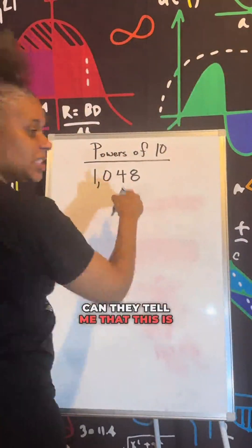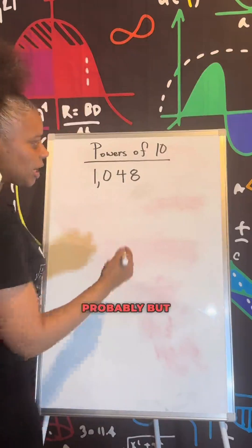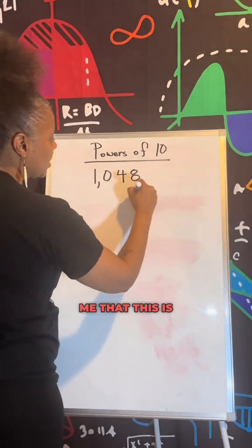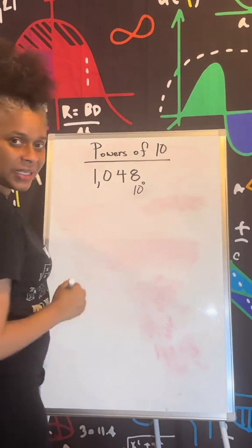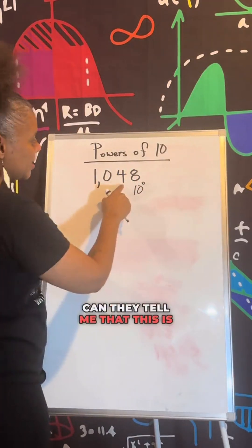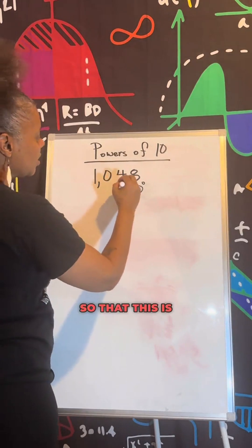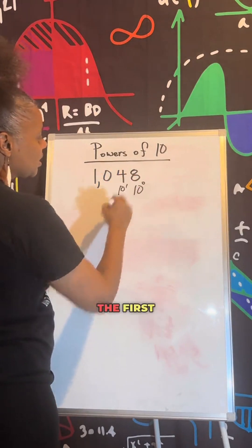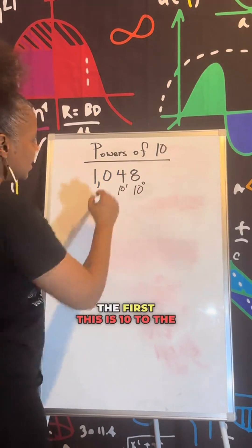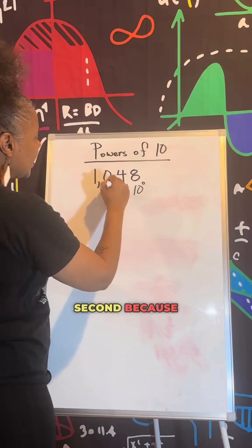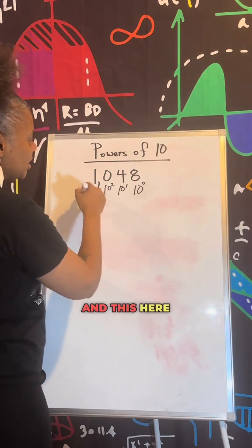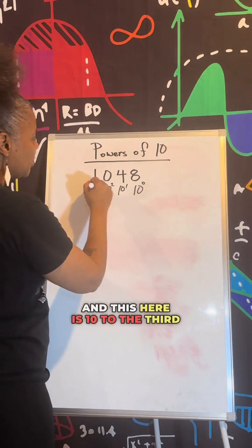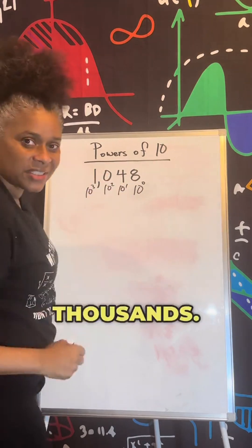Can they tell me that this is the 1's place — and that this is equal to 10 to the 0 power? Can they tell me that this is the 10's place, so that this is equal to 10 to the 1st? This is 10 to the 2nd because this is 100's, and this here is 10 to the 3rd because this is 1,000's.